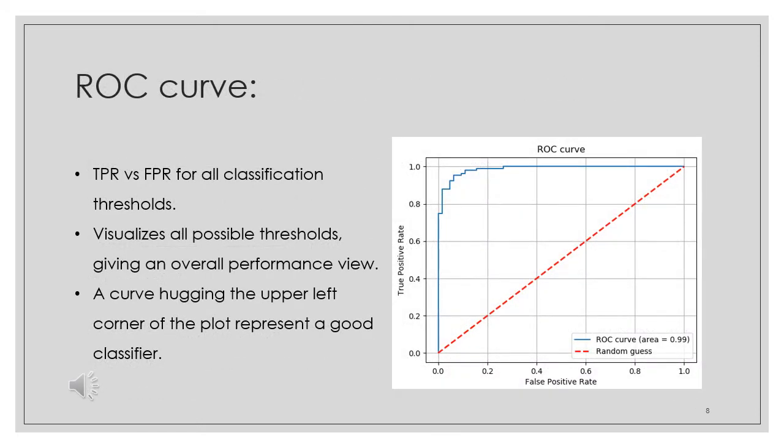The receiver operating characteristic curve is one of the most important evaluation metrics for checking any classification model's performance. It is a plot of the true positive rate against the false positive rate for all possible classification thresholds, which shows the sensitivity of the classifier. It shows how many correct positive classifications can be gained as more and more false positives are allowed. Its benefit over any other metric is that it presents the performance of the classifier on all possible classification thresholds, not only at a single threshold point.